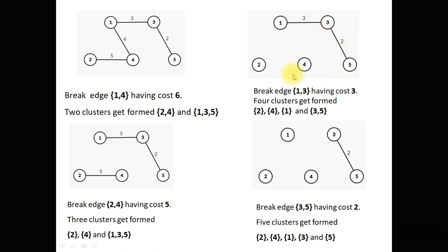After that we break edge 1-3 having cost 3 and 4 clusters are formed: {2}, {4}, {1}, and {3, 5}. And at last we cut edge 3-5 having cost 2. After that 5 clusters are formed: {1}, {2}, {3}, {4}, {5}.